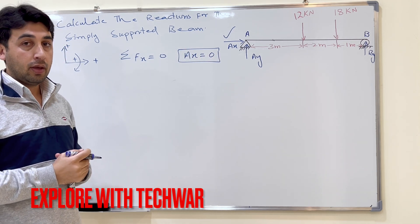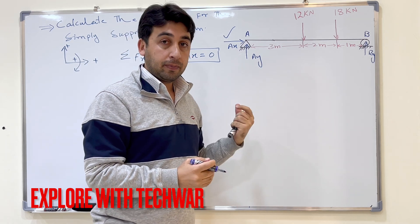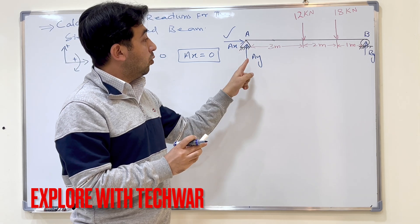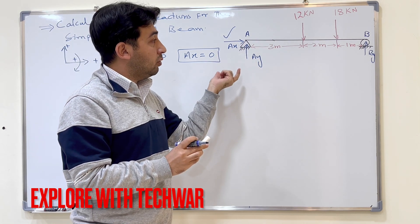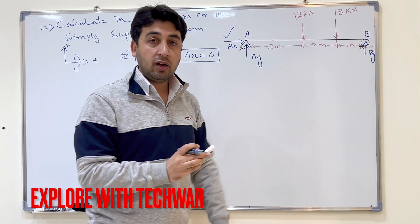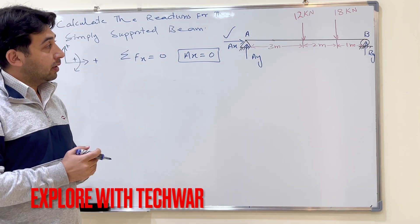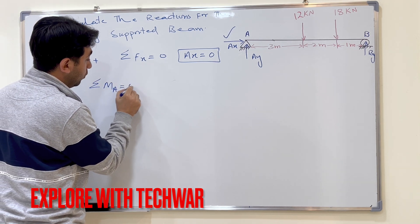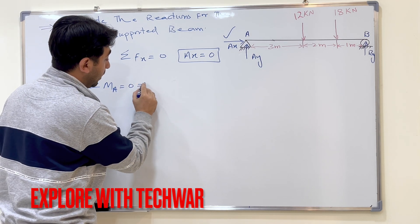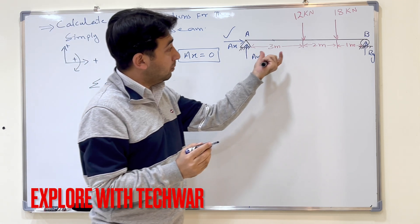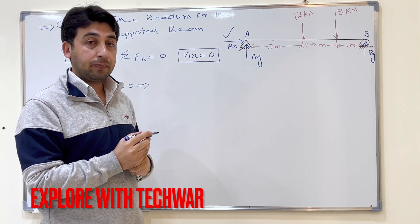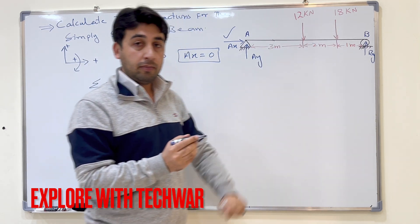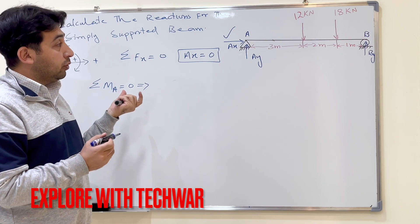Now we need to find AY and BY. To find BY, I take the moment about point A. This eliminates AY and AX from the equation since their moment arms are zero, leaving only one unknown: BY. So I write: sum of moments about point A equals zero.